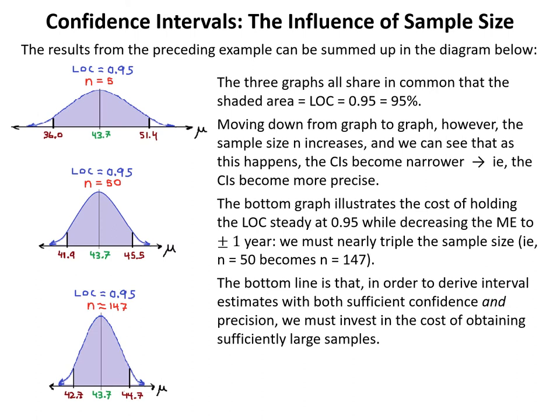The results from example 4 show that as sample size n increases while holding LOC = 95%, the confidence intervals become narrower and more precise. To decrease the margin of error from ±7.7 (n = 5) to ±1.8 (n = 50) to ±1.0 (n = 147), the sample size must increase dramatically. In this case, going from n = 50 to the required n_min = 147 nearly triples the sample size. In order to derive interval estimates with both sufficient confidence and precision, we must invest in the cost of obtaining sufficiently large samples.